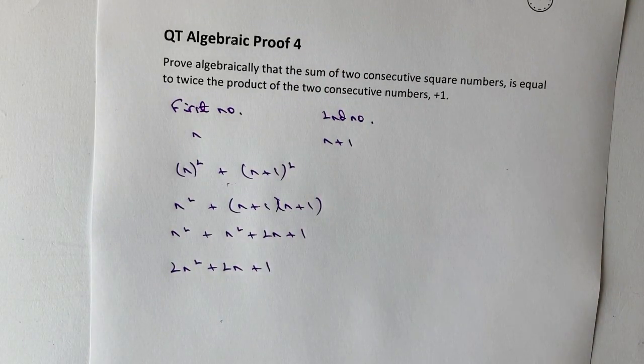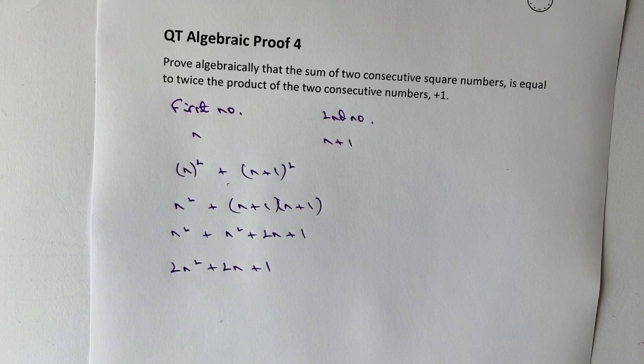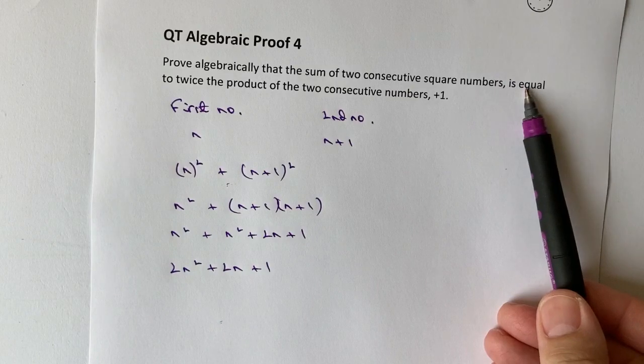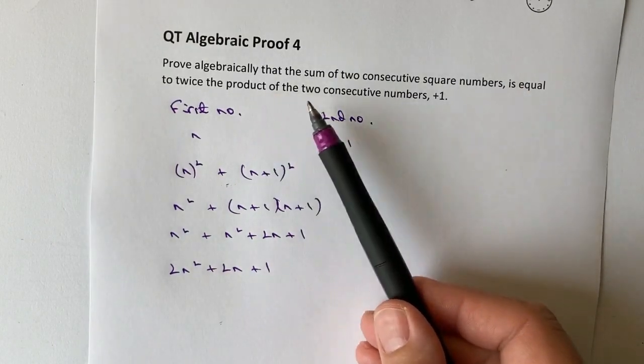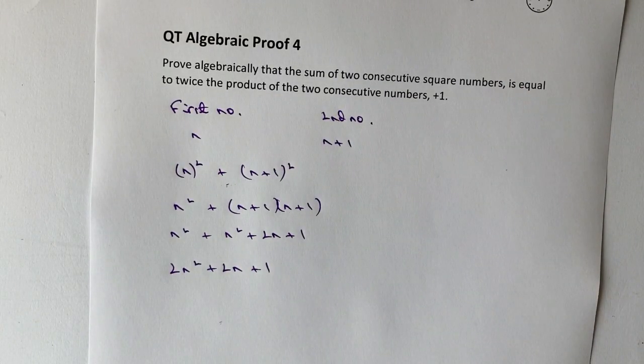So that's the expression for the sum of two consecutive square numbers. And it's saying here it's equal to twice the product of the two consecutive numbers.